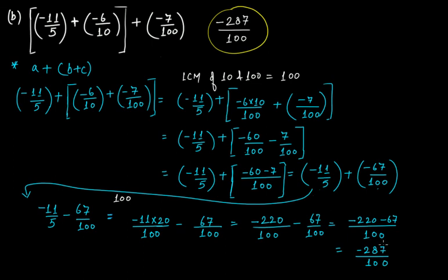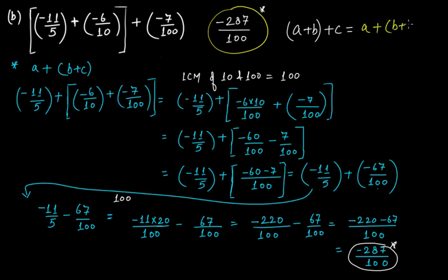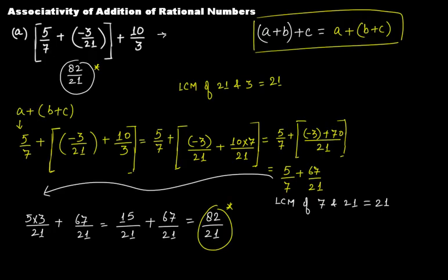This result is exactly equal to the first case. We have again proved that (A + B) + C equals A + (B + C). Therefore, yes, addition of rational numbers is associative. Addition is associative for rational numbers.